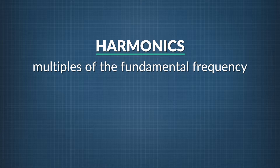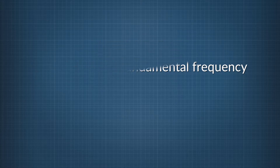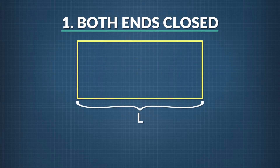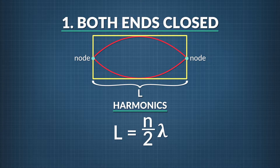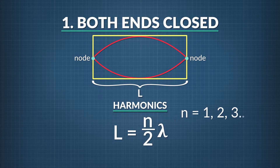Harmonics follow a mathematical pattern we can write out as an equation. In a tube with both ends closed, standing waves must begin and end at the center of the end caps — only nodes can form at these places. The most basic shape of a wave that can fit in this space, with a node at each end, corresponds to the fundamental frequency. The harmonics follow the equation: L, the length of the tube, equals n divided by 2 times lambda, the wavelength, where n is any positive integer: 1, 2, 3, etc.